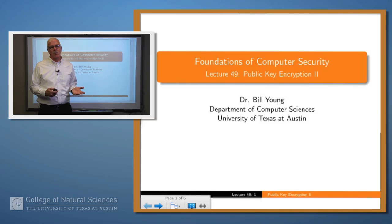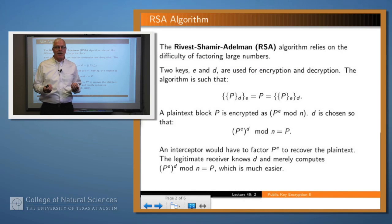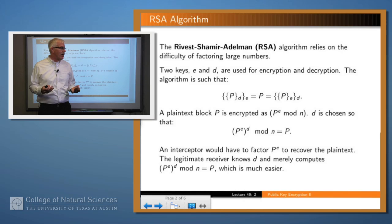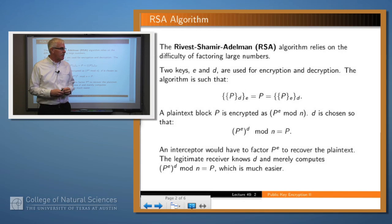Welcome back. In our last lecture we introduced the notion of asymmetric algorithms. Today we're going to talk a little bit more about these public key algorithms. The most widely used, probably by far, is the RSA algorithm — the Rivest Shamir Adleman algorithm — and it's based upon the difficulty of factoring large numbers, large products of primes.